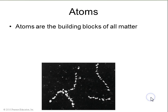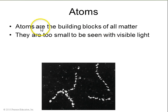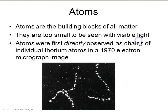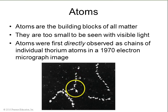The first thing you need to know is that everything in the world is made of atoms, and they're incredibly small. Even a teaspoon of water has over 10 to the power 23 atoms in it. They're much too small to be seen by visible light, and in fact the first time atoms were directly observed was in 1970, in these images of individual thorium atoms connected in chains.